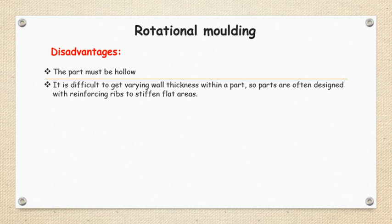Within a part, you cannot get a varying thickness. A constant thickness component of larger dimensions you can prepare. So the parts are often designed with reinforcing ribs to stiffen flat areas. These are a couple of disadvantages of rotational molding.